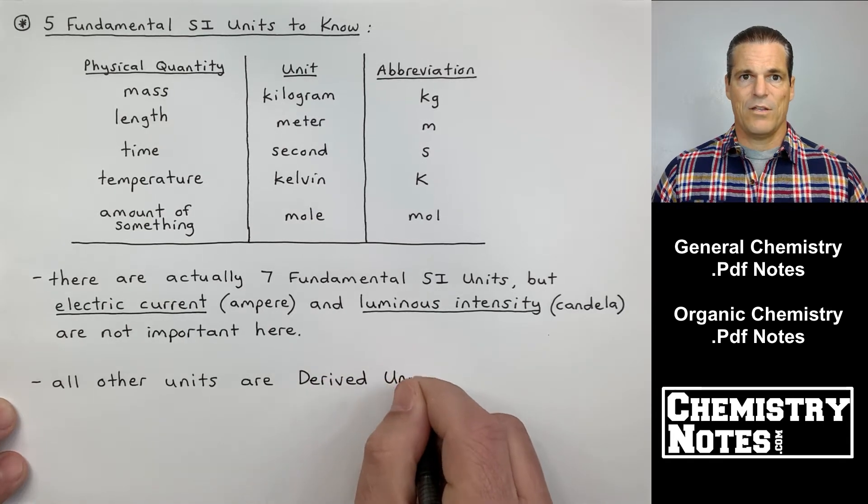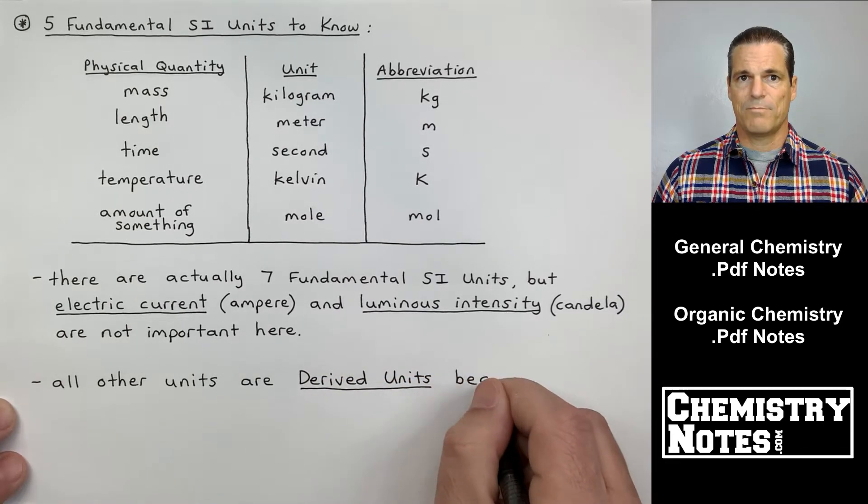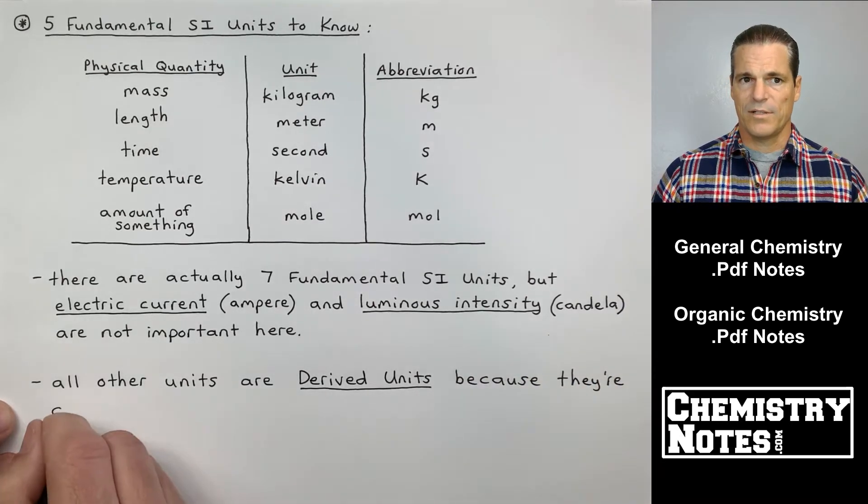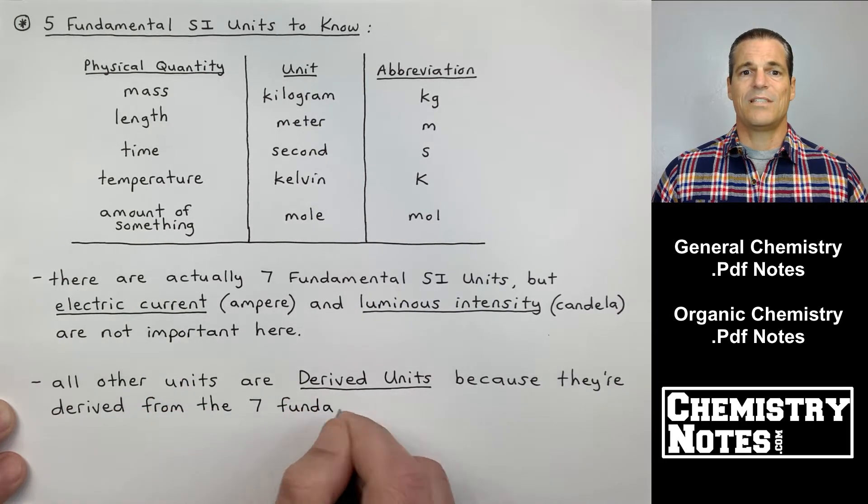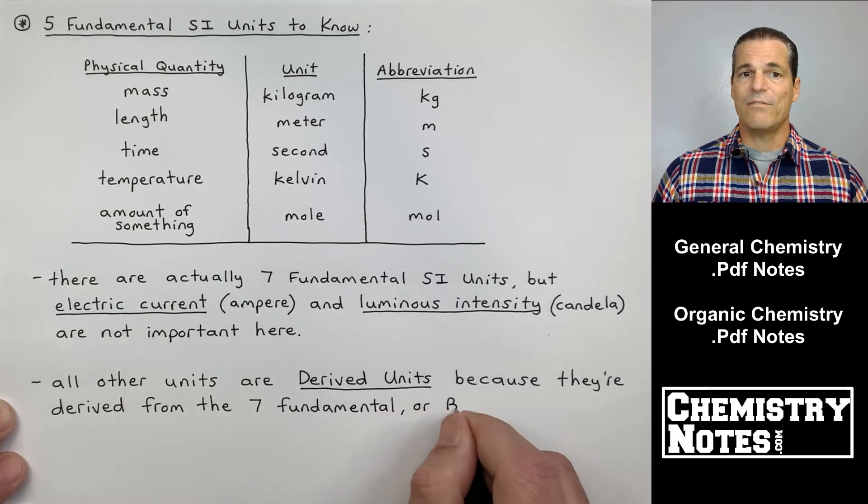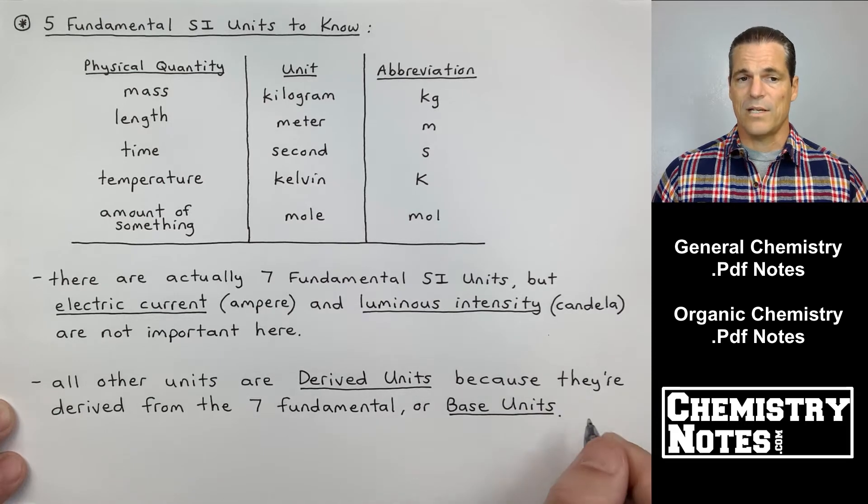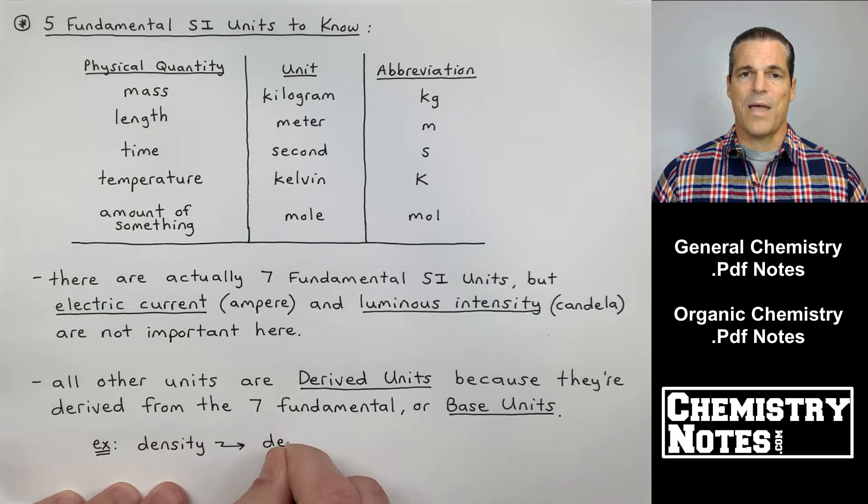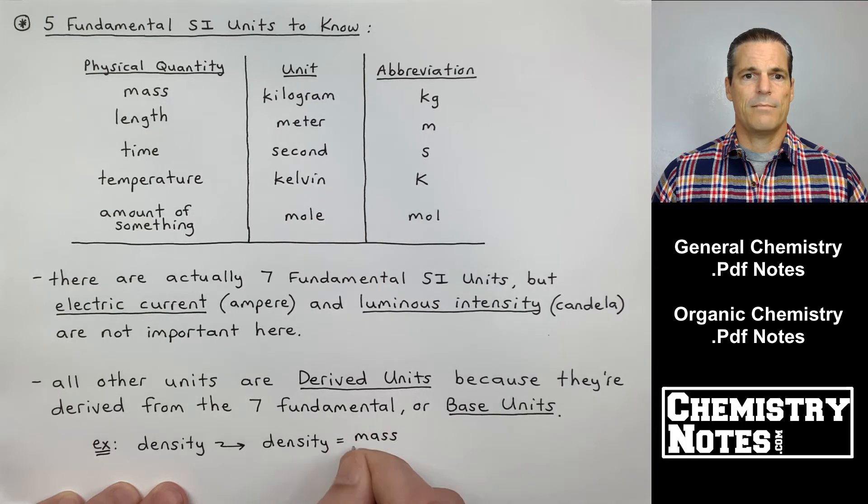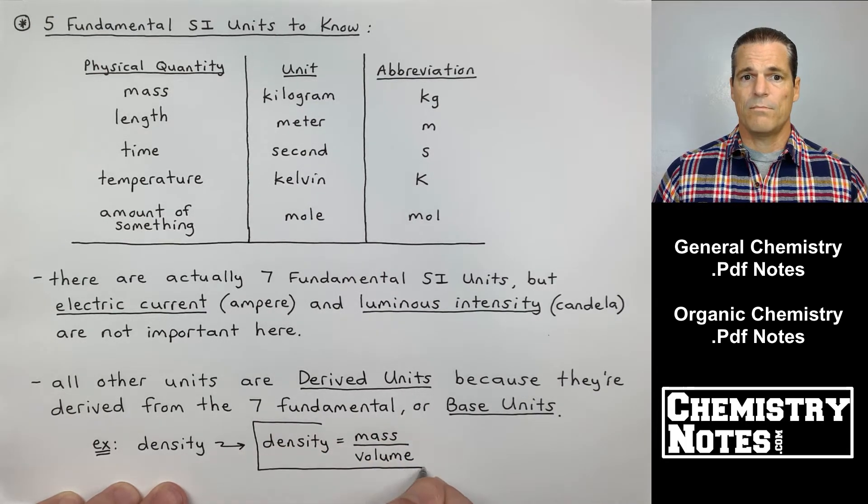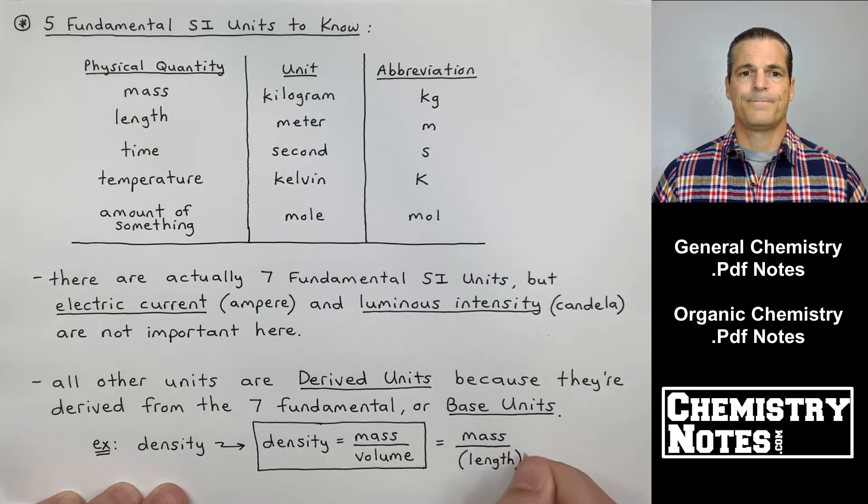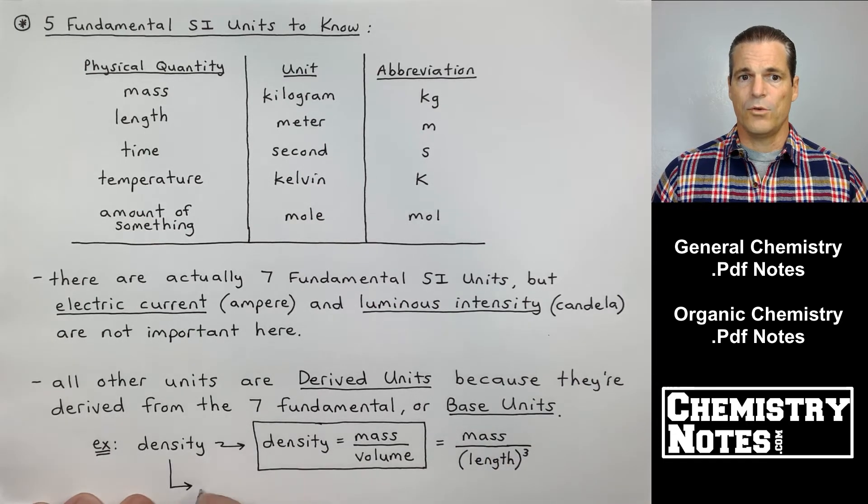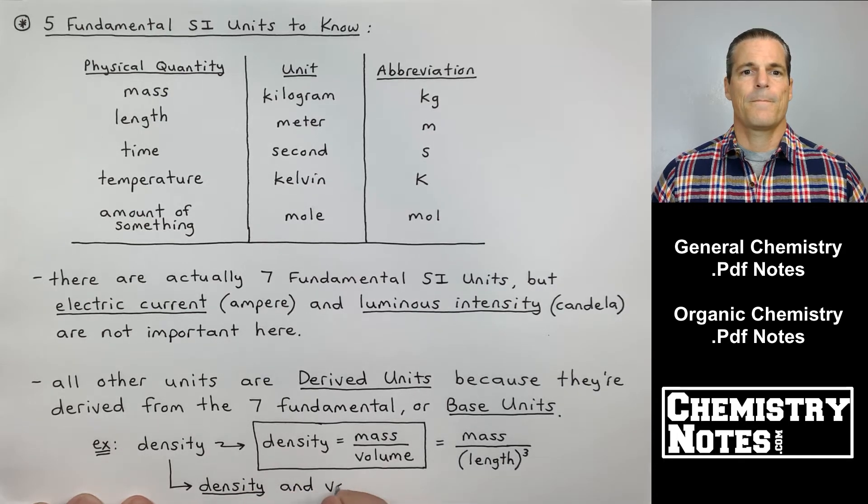Those are my SI base units. I can get derived units from mixing and matching those base units. And that's what the second bullet point down there is referring to. It says all other units, for example, volume, density, all other units are derived units because they're derived from the seven fundamental or base units. As an example, I had mentioned density. We will learn density is mass over volume. So mass could be in grams. Your volume would be actually also a derived unit because volume is length cubed. So density and volume are two examples of derived units.